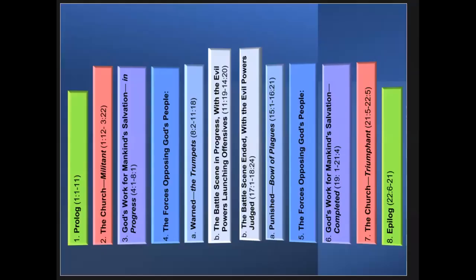One thing we need to understand about the book of Revelation is the chiastic structure. Chiasm is characterized by a structure in which one theme is repeated in reverse order. I have color-coded it. Revelation 1 to 11 is a prologue, then you get an epilogue which is Revelation 22:6 to 21. Then you have the church militant — the seven churches — Revelation 1:12 to 3:22, and correspondingly Revelation triumphant in Revelation 21:5 to 22:5. So you get the militant and triumphant in the book of Revelation.